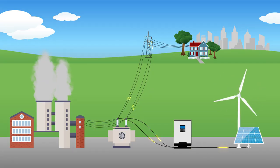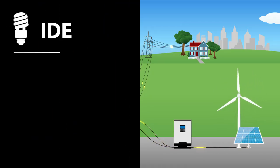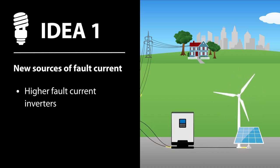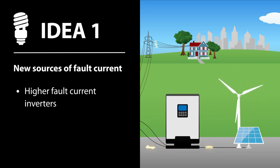If we keep the grid running the way it is now, with grid protection schemes that are based on fault current, we have a couple of options. One is to design inverters that can provide fault current. We can do this by oversizing certain components in the inverter.